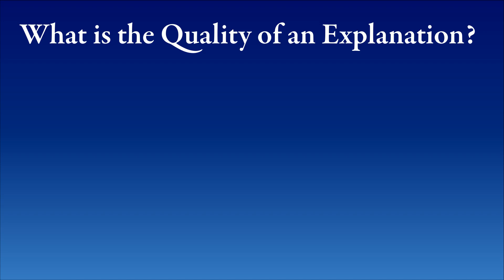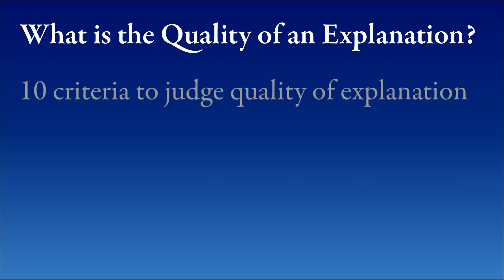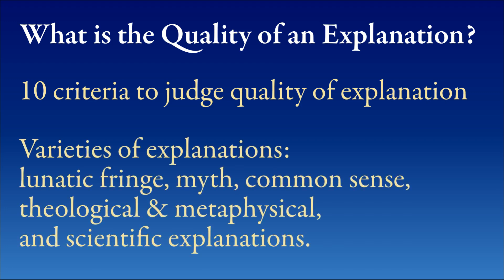So what is the quality of an explanation? There are at least ten criteria of an explanation — criteria which, the more they are fulfilled, the better the explanation. And these criteria apply to all explanations. We can think of quite a large variety of explanations: lunatic fringe explanations, myth, which is explanatory, common sense explanations, theological and metaphysical explanations, and most importantly, scientific explanations. Theoretical science is explanatory — it explains empirical science.